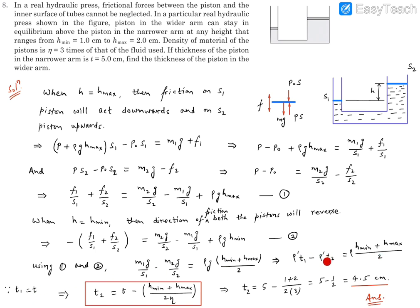T1 is T, so we want T2. T2 = T1 − (H_min + H_max)/(2η). Substituting values: T = 5 cm, H_min = 1 cm, H_max = 2 cm, η = 3. So T2 = 5 − (1 + 2)/(2 × 3) = 5 − 3/6 = 5 − 0.5 = 4.5 cm. The thickness of the second piston is 4.5 cm.